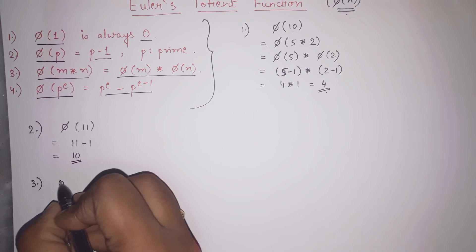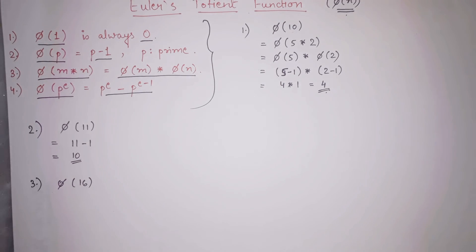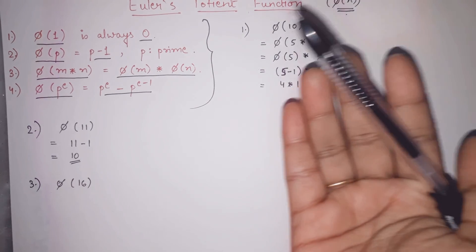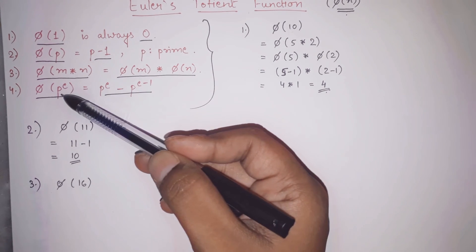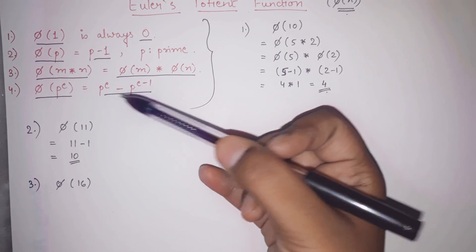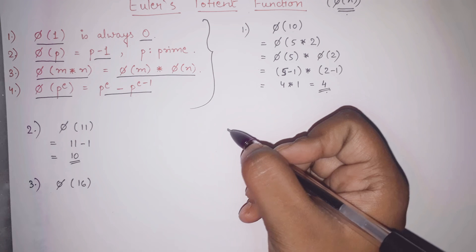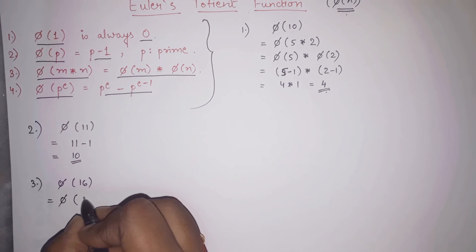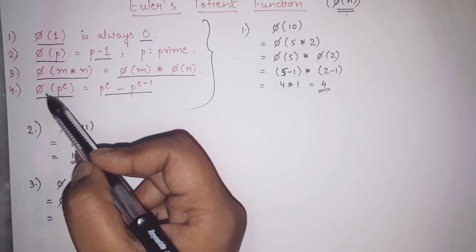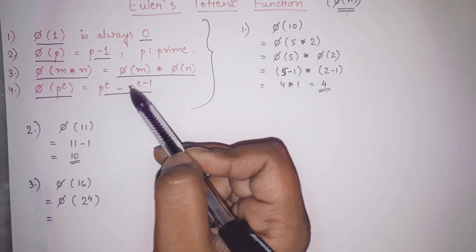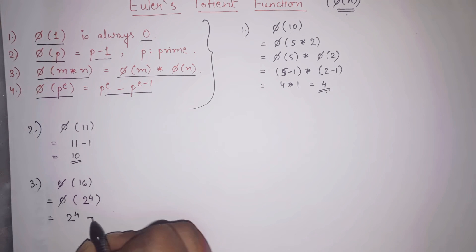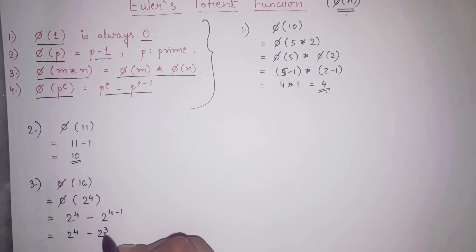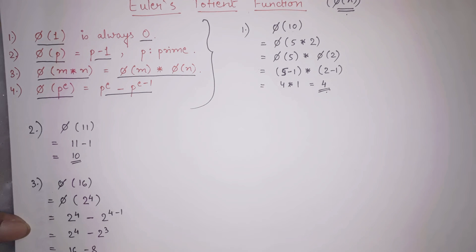Let us find phi of 16. First we check: is 16 prime? No — 16 is not prime, it is composite. So we check the next step: can I convert 16 into the form of p raised to e? Starting with 2: can I write 2 raised to something equal to 16? Yes — 2 raised to 4 equals 16. So phi of 16 equals phi of 2 raised to 4. Applying the formula, phi of p raised to e equals p raised to e minus p raised to e minus 1, so this is 2 raised to 4 minus 2 raised to 3, which is 16 minus 8, equal to 8.